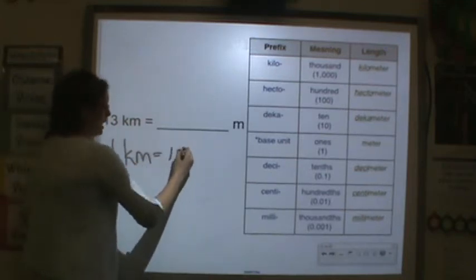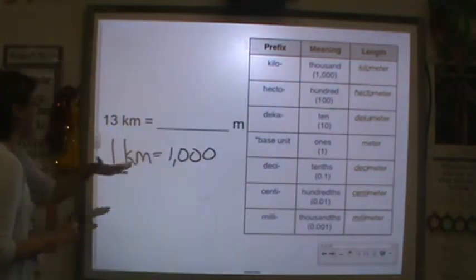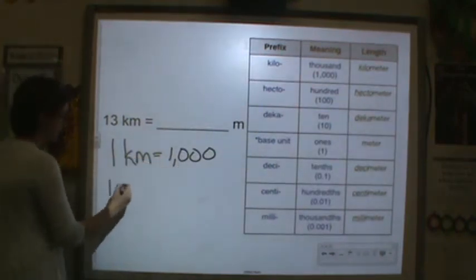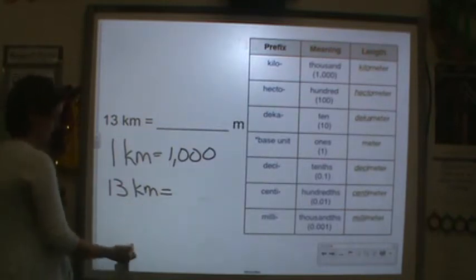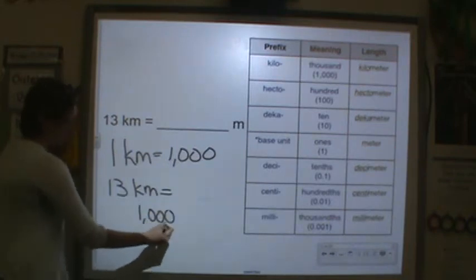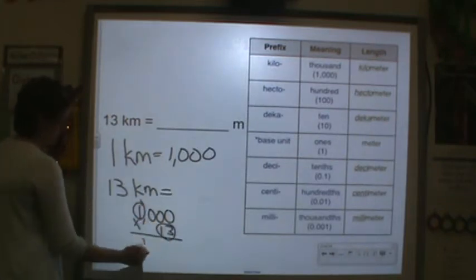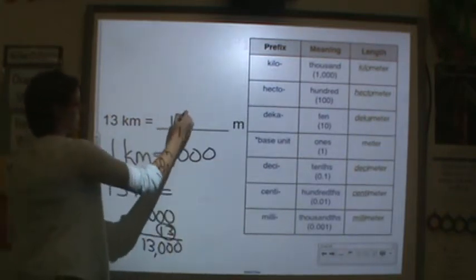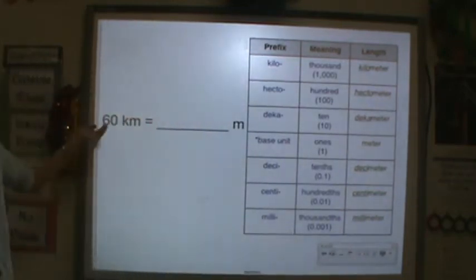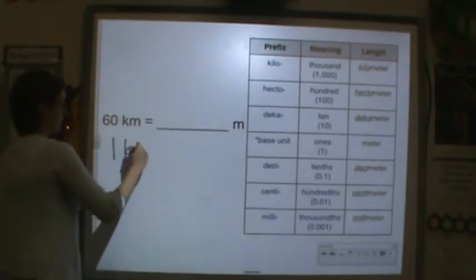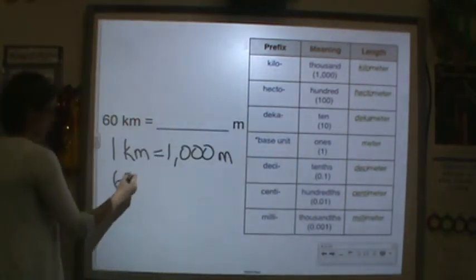Let's try 13 kilometers. One kilometer equals 1,000 meters. If I have 13 kilometers, I multiply 1,000 times 13 because I'm adding 13 equal groups of a thousand. 13 times 1 is 13, then add three zeros: 13,000 meters.